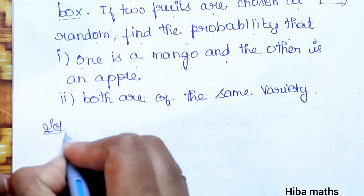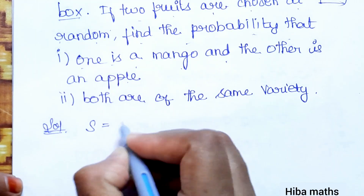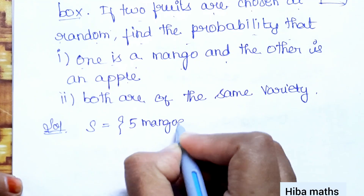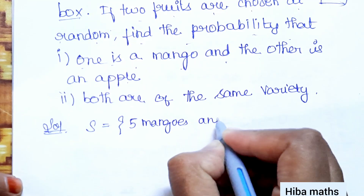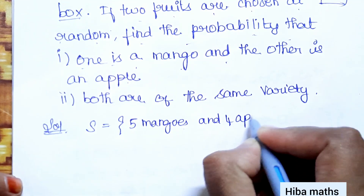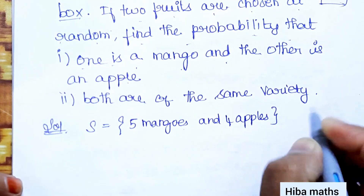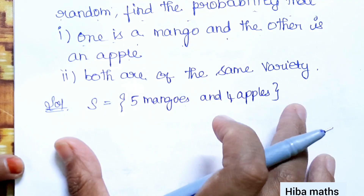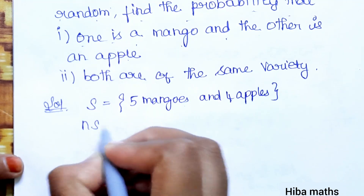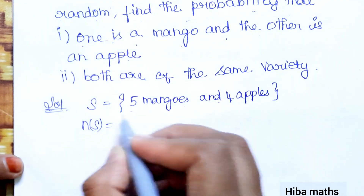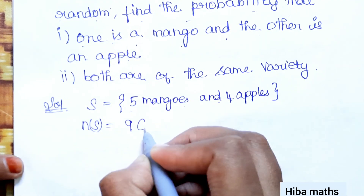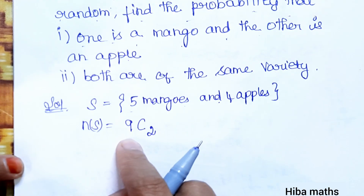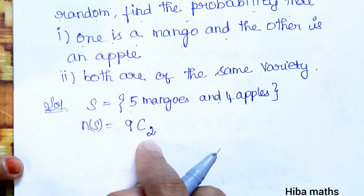For the solution, the sample space consists of 5 mangoes and 4 apples, so the total is nine fruits. We will use combinations. So n(S) is total nine fruits, and we are choosing two fruits at random.